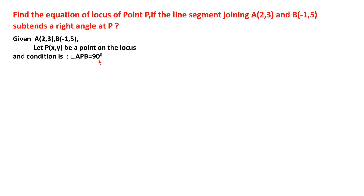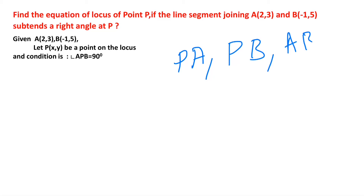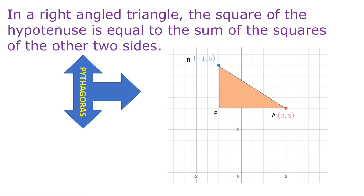Angle APB = 90°. Since it is a right angle triangle, PA, PB, and AB are the three sides. We can find the relation using the Pythagorean theorem, which says the square of the hypotenuse equals the sum of the squares of the other two sides. Here AB is the hypotenuse, so AB² = AP² + PB².